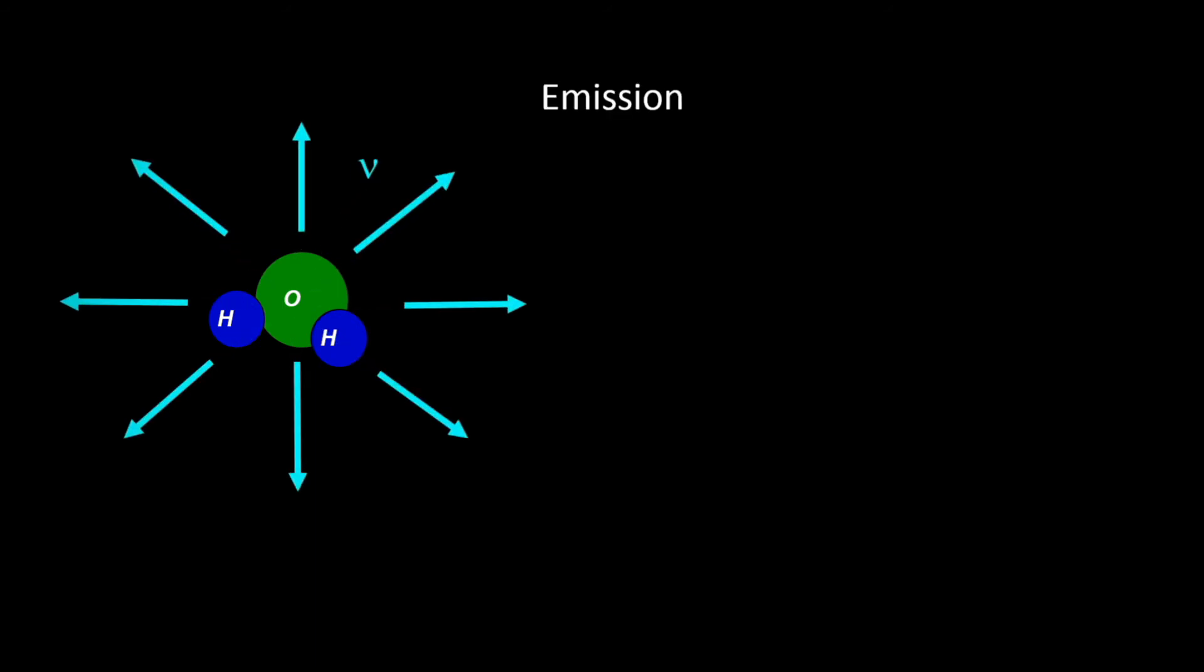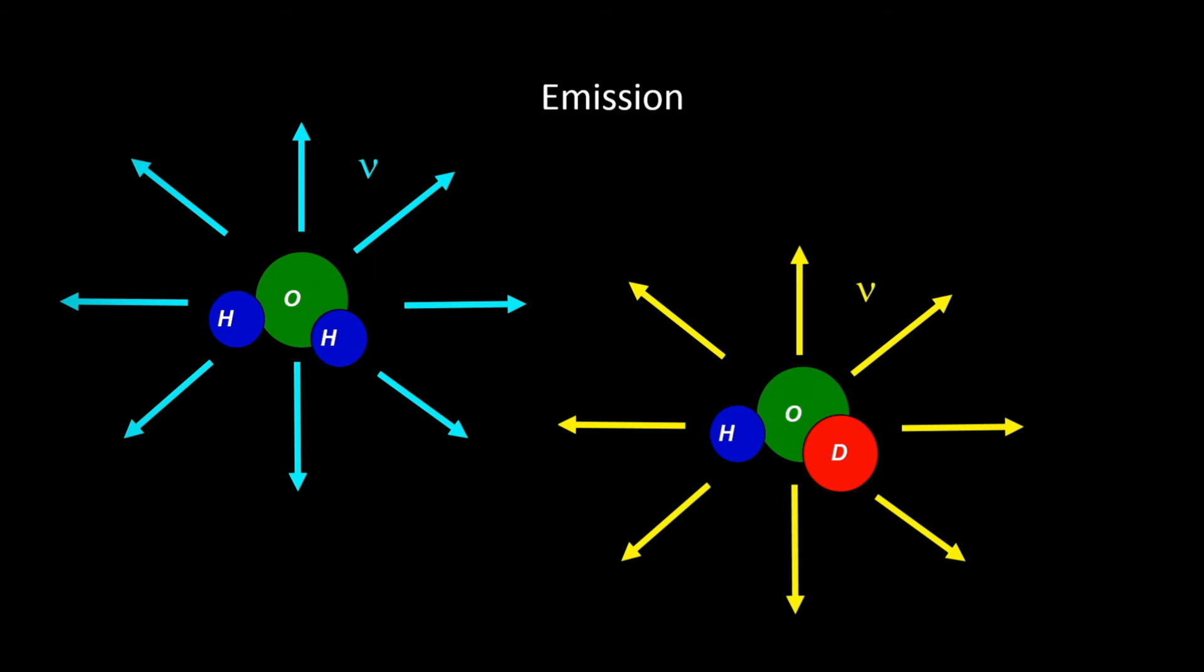So absorption is great but of course there's emission as well. If we have a molecule at any temperature there will be emission of light at a particular frequency. Again that frequency is associated with the rotation vibrational characteristics of that molecule. So if we have a different molecule the wavelength of light that's emitted will be slightly different. Instruments can be designed to measure the emission spectrum just as we have instruments that can measure the absorption spectrum.